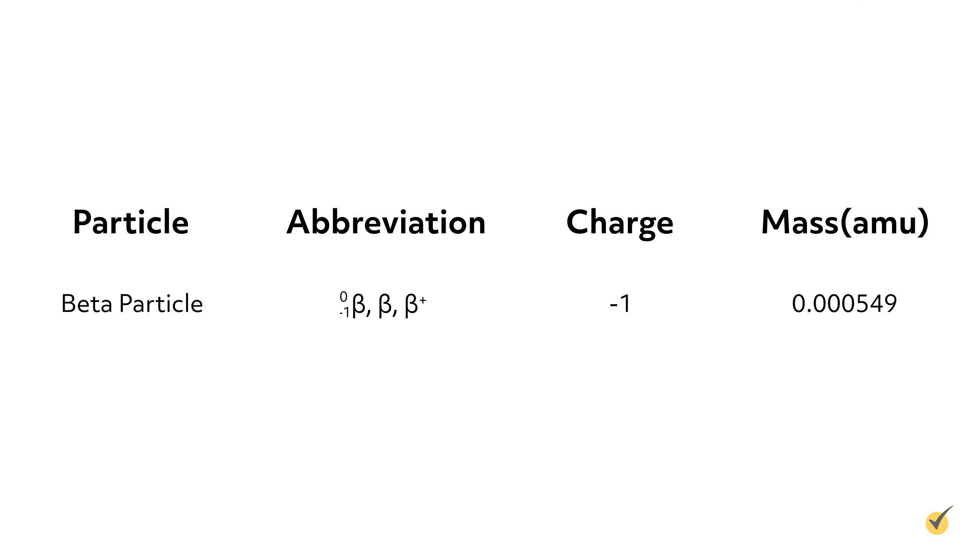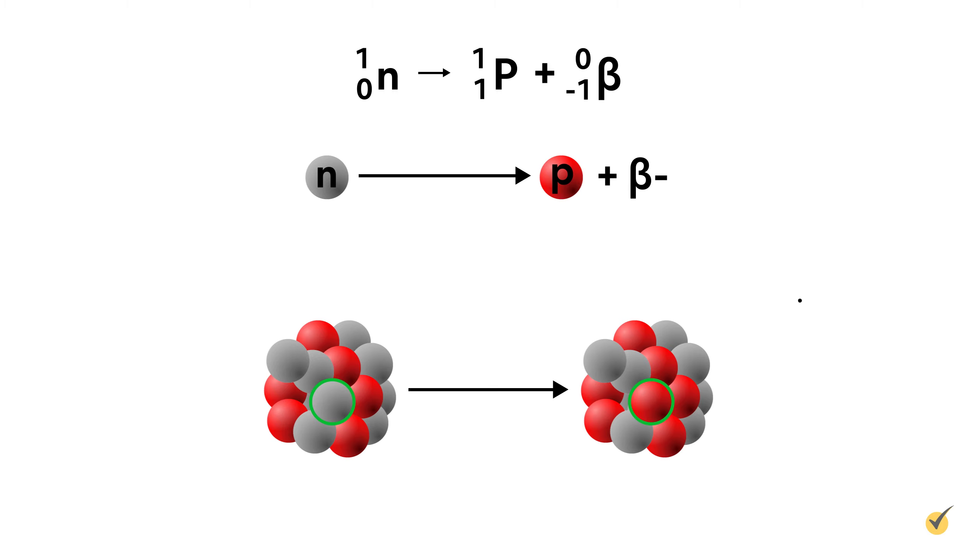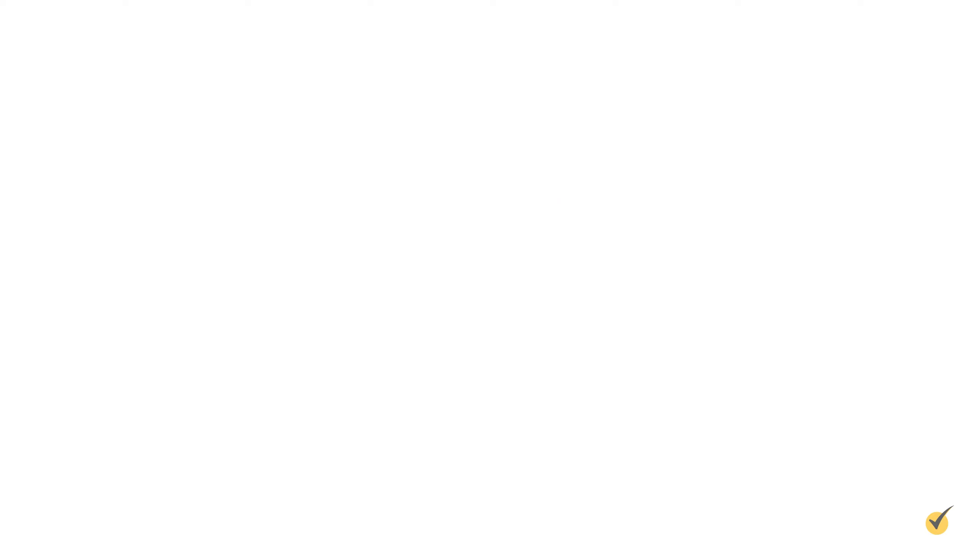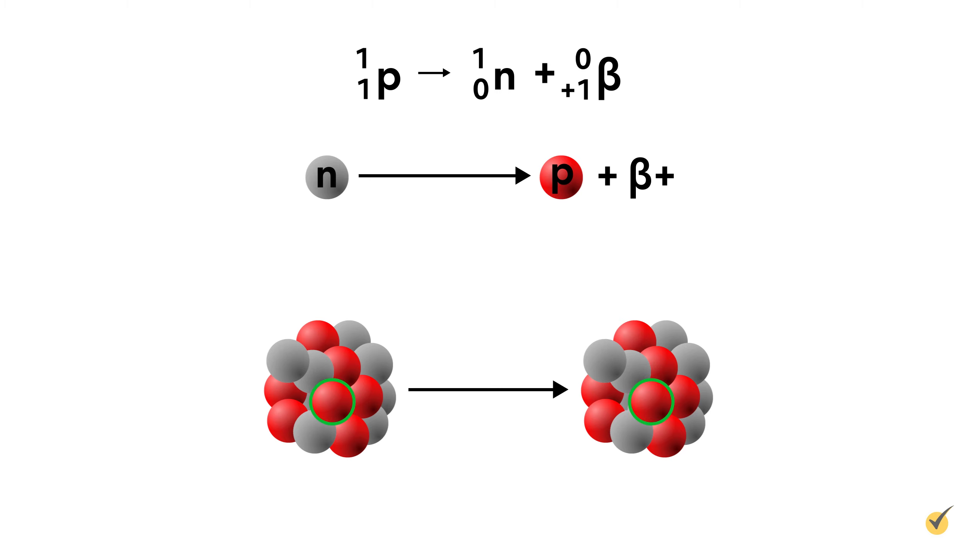Beta particles are high-energy electrons emitted from the nucleus when a neutron is converted into a proton and denoted several ways. They are physically equivalent to electrons, but are produced in a specific way, so it's best not to interchange the notation. Positrons are positively charged electrons, or the antiparticle to electrons. They are formed when a proton in the nucleus is converted to a neutron, which then expels a positron. Gamma rays are high-energy photons with no mass or charge. Also, remember that N is a neutron and P is a proton.